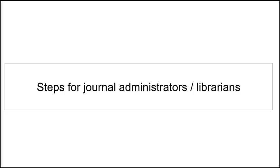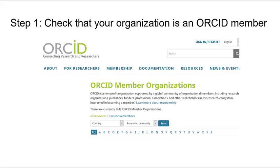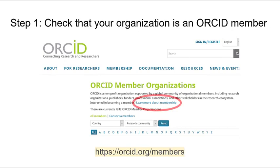Now that we know about ORCID, the OJS plugin, and the benefits for journals, we'll go over the steps for registering for the member API and setting up the plugin in individual journals. The first step is to check that your institution is an ORCID member organization. You can visit orcid.org/members to see a full list of organizational members. You may need to connect with the ORCID contact at your institution, since they will need to confirm with ORCID that they would like to use one of your organization's member API credentials for your OJS journals. If your institution is not a member but would like to be, you can visit the Learn More About Membership page on the ORCID website to request membership.